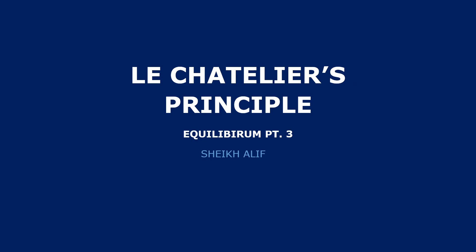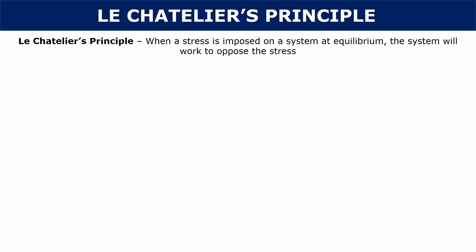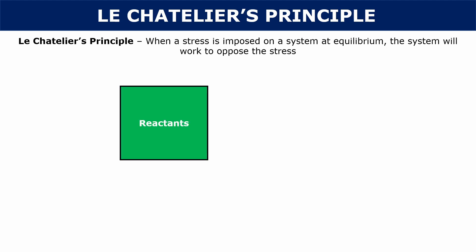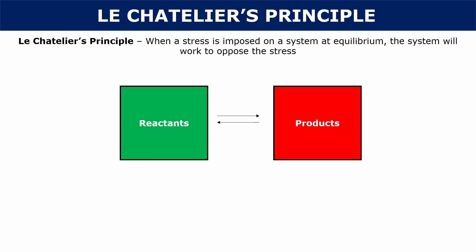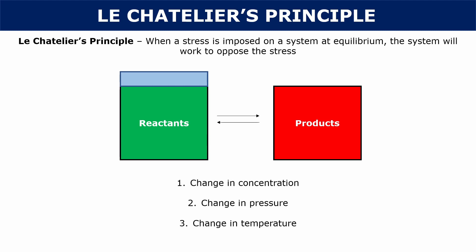Hey, what's up everyone. Today we're going to be talking about Le Chatelier's principle, and this principle is a really important part of equilibrium. Le Chatelier's principle tells you that when a stress is imposed on a system at equilibrium, the system will work to oppose the stress. We're going to look at three different types of stresses: a change in concentration, a change in pressure, and a change in temperature.